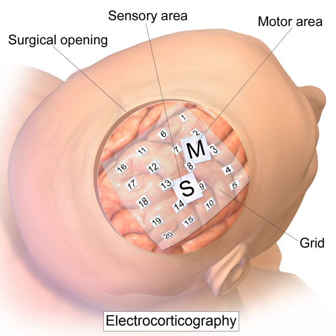Penfield and Jasper also used electrical stimulation during ECoG recordings in patients undergoing epilepsy surgery under local anesthesia. This procedure was used to explore the functional anatomy of the brain, mapping speech areas and identifying the somatosensory and somatomotor cortex areas to be excluded from surgical removal. A doctor named Robert Galbraith Heath was also an early researcher of the brain at the Tulane University School of Medicine.